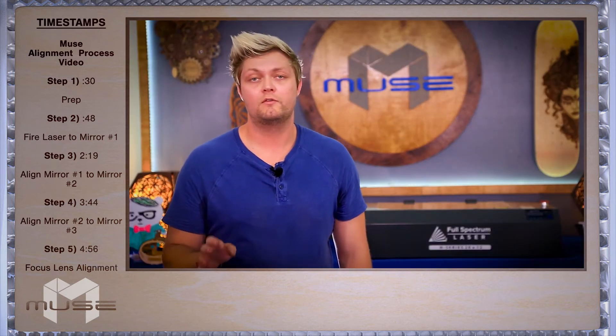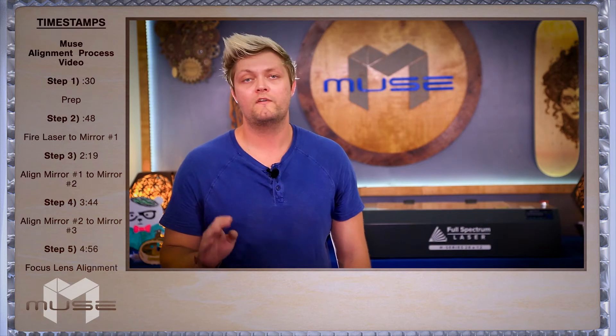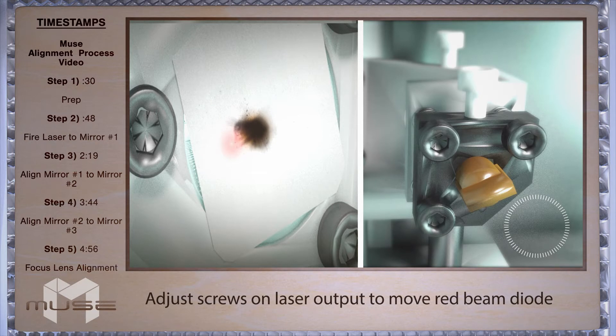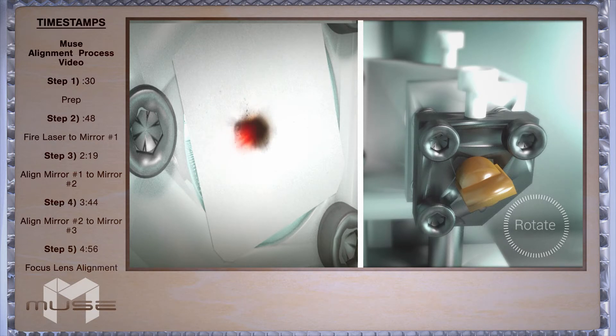Now we'll adjust the position of the red dot diode with our 2.5 inch hex key. Tightening or loosening the three screws on the red dot diode will adjust its position. Some experimenting is required to understand how each screw changes and adjust the red dot. Use only tiny micro movements of the screw.